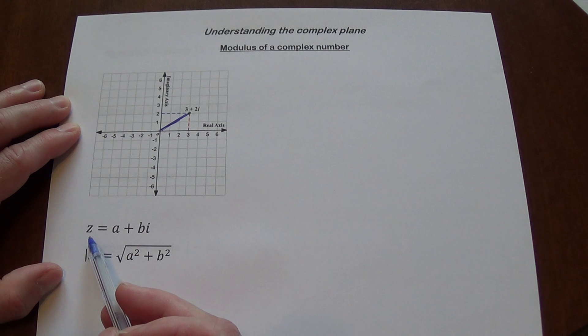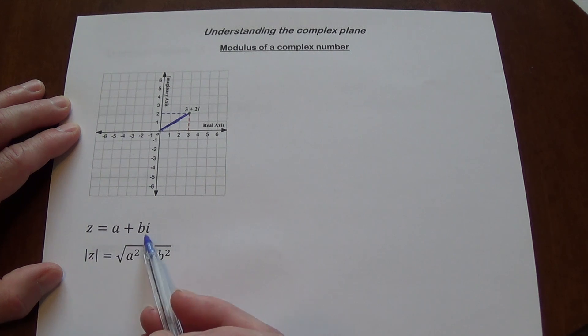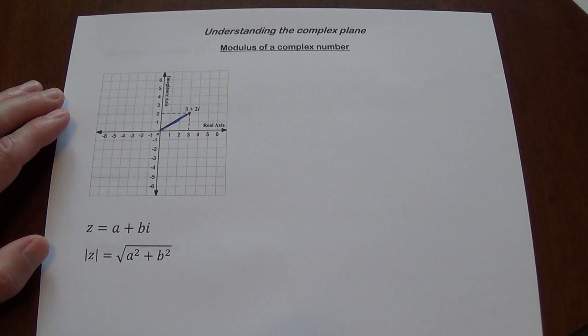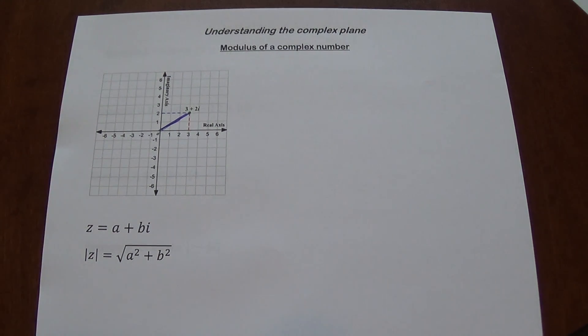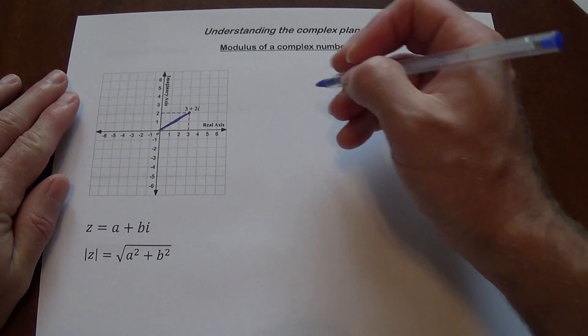If you look at this, you have a complex number z equals a plus bi. The modulus, which has the same symbol as the absolute value, is going to equal square root of a squared plus b squared, which is precisely what you would use to find the length of the hypotenuse. So in this case,